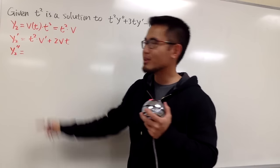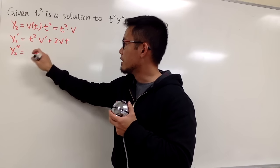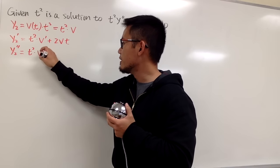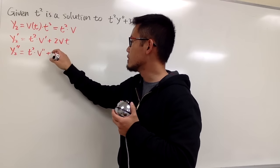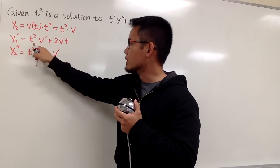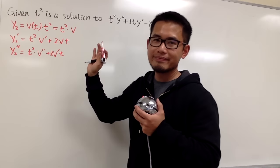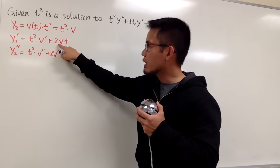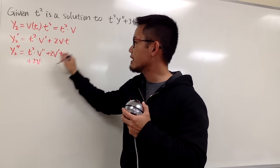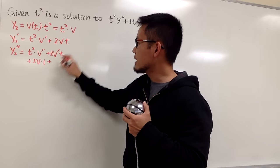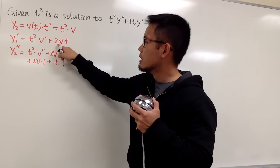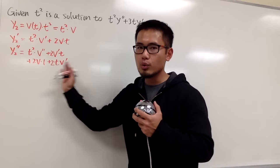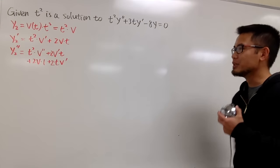For the second derivative y2 double prime, we do the product rule on both terms. For the first term, we keep t squared and multiply by φ double prime, then add φ prime times 2t. For the second term, using the product rule on 2φt, we treat 2φ as the first function and t as the second: 2φ times 1, plus t times 2φ prime. Now we have all the ingredients to plug into the differential equation and solve for φ.